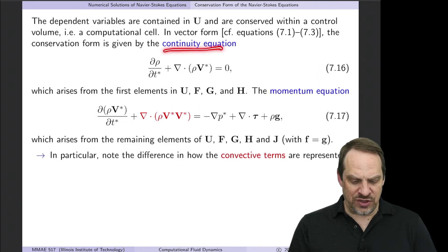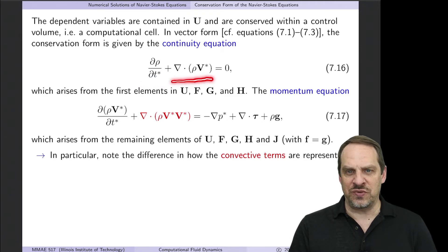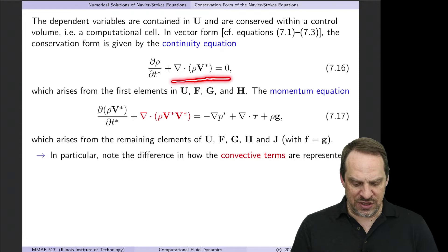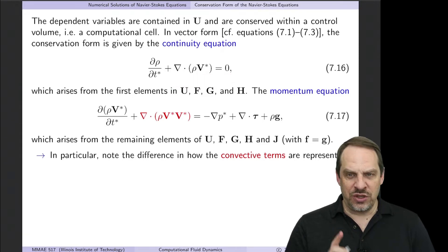The continuity equation then in vector form looks like this. It's ∂ρ/∂t plus ∇·(ρV*) = 0, so the divergence of the density times V*, that is the velocity, is equal to 0. Notice if the flow is incompressible, such that ρ is a constant, it doesn't change with time, it's a constant here, can be eliminated, and we just have ∇·V = 0, as we had for the incompressible case.